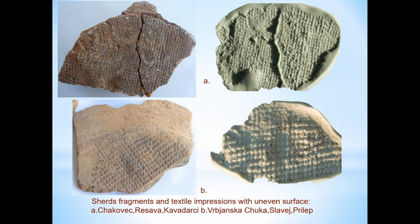On many fragments we can notice protruding and hollow parts which probably appeared when the vessel was made. On the protruding parts the weft is more visible and has a bigger diameter due to stretching, and on the hollow parts the weft is not, or is not so well visible, and has a smaller diameter.